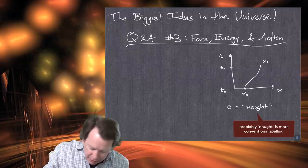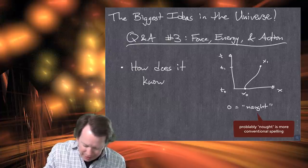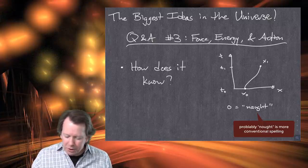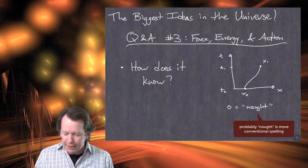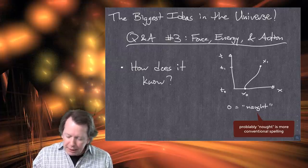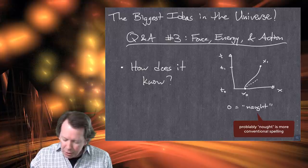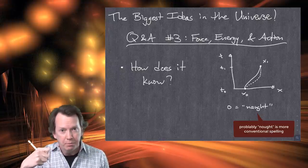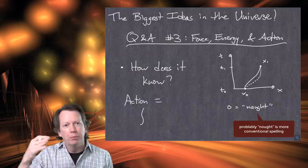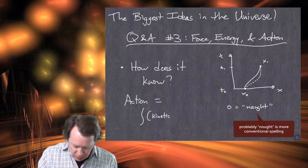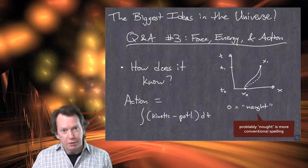In the least action way of doing things, we say: of all the paths you could traverse between X naught and X1, between time T naught and T1, what is the one that minimizes this quantity called the action? And all I wanted to highlight is the question: how does it know? This is the big issue with the miraculous feeling we have about the principle of least action.